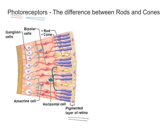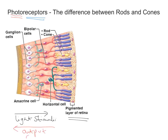That stimulus is going to be coming in from this direction — so this is the direction of the light stimulus. But in the other direction, that's going to be the direction of the output response. So light stimulus is coming in from left to right, but our output response is going from right to left. And we've got these rods and cones.